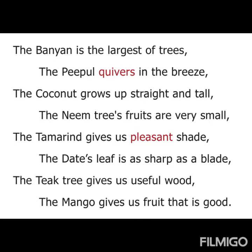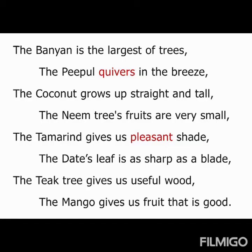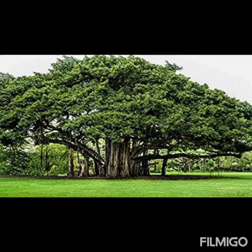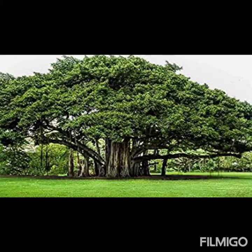Students, this poem is adapted and based on a poem by Sarah Coleridge. Children, see the poem again — it is a very simple poem and very easy to understand. See the first line: the banyan is the largest of trees. The banyan tree, banyan means alamaram. The banyan is the largest of trees — it is a very big tree.